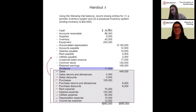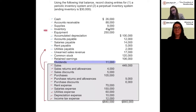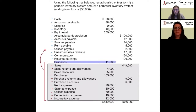Handout three covers closing entries. We are taking all of our temporary accounts and closing them out to our permanent accounts. Permanent accounts — cash, accounts receivable, supplies, inventory, equipment, accumulated depreciation, accounts payable, salaries payable, rent payable, unearned revenue, common stock, and retained earnings — are our balance sheet items. Sales, purchases, and all expenses are income statement items that we need to close out.